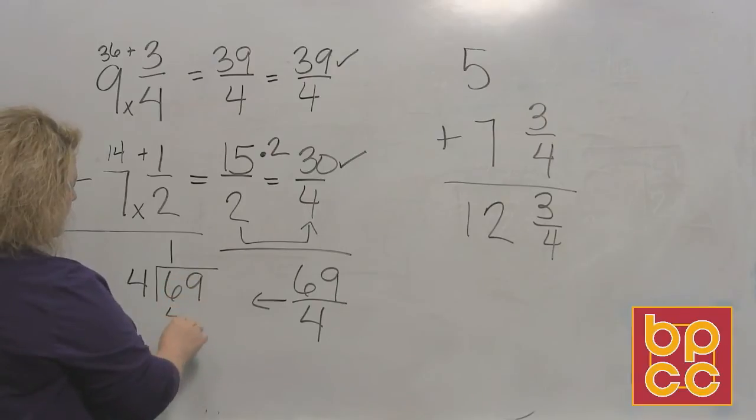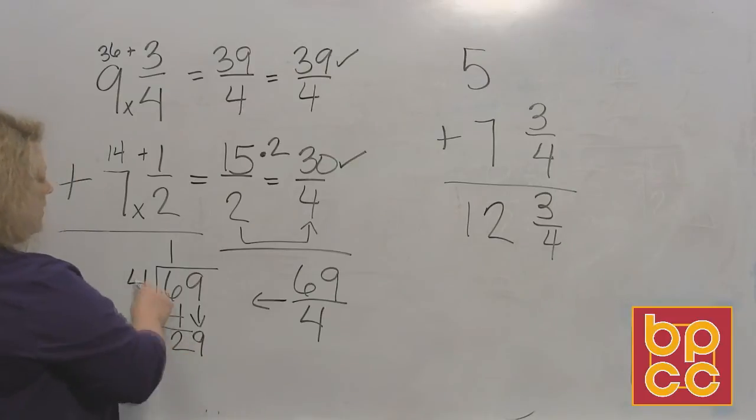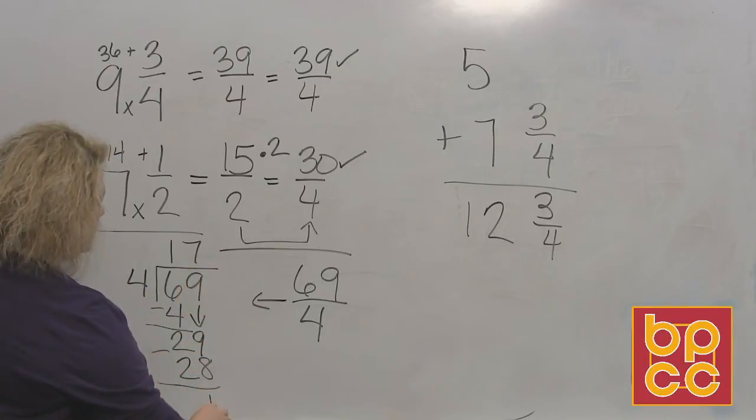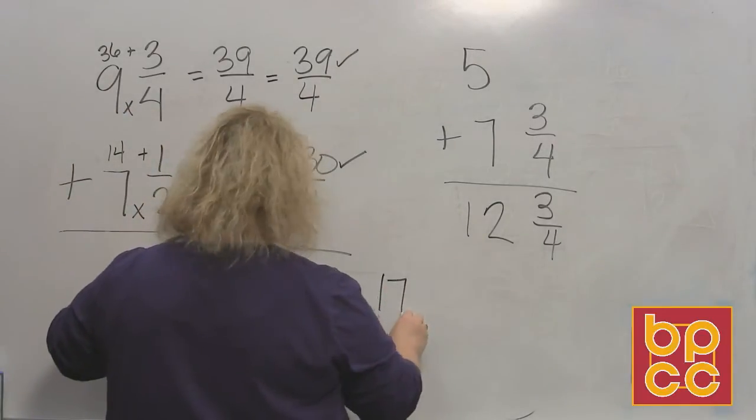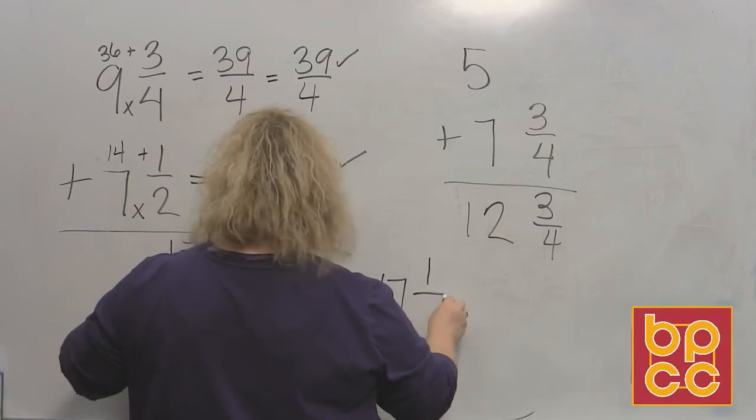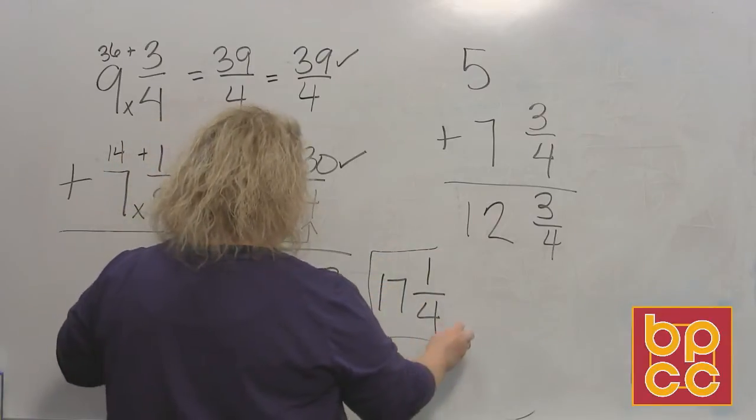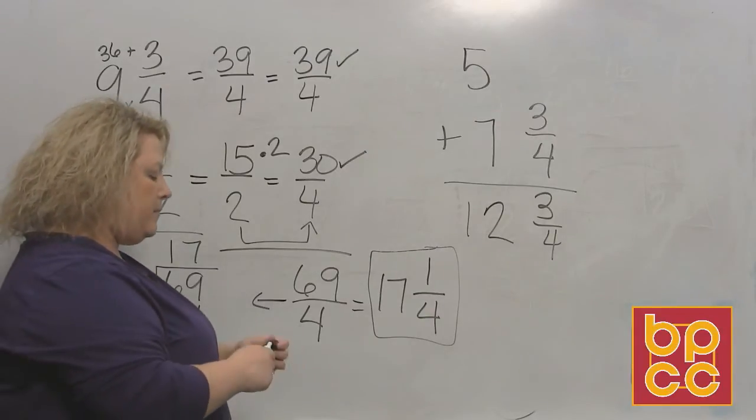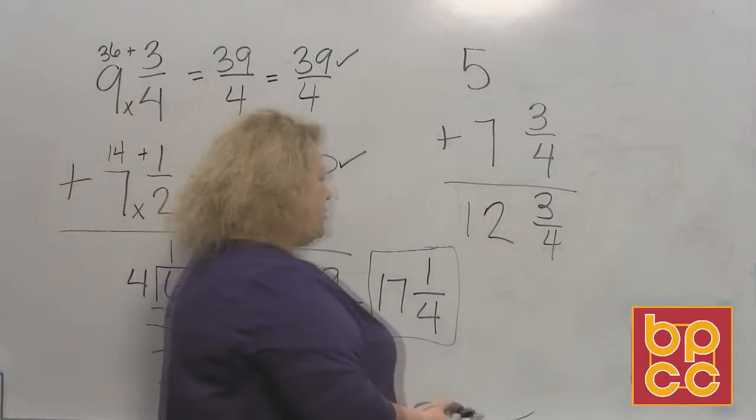I'm going to go through the division process. Four divides into 6 one time, which makes 4, and that leaves me 2. Bring down the 9. Now 4 divides into 29 seven times, which makes 28, so that leaves 1. So that is 17 as a whole number, and the remainder 1 is your numerator and 4 stays your denominator. So 69 over 4 changes into 17 and one-fourth if you are going to change it back to a mixed number.